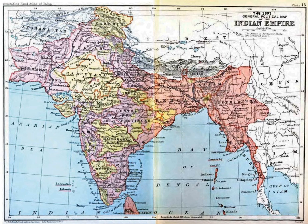The Provinces of India, earlier Presidencies of India and still earlier Presidency Towns, were the administrative divisions of British Governance in the subcontinent. Collectively, they were called British India. In one form or another, they existed between 1612 and 1947, conventionally divided into three historical periods.